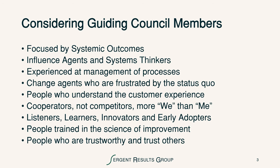Considerations for selecting guiding council members include that they ought to be focused on systemic outcomes. They need to be influence agents and systems thinkers, experienced in managing processes, and change agents who are frustrated by the status quo. They need to understand the customer experience, be cooperators not competitors, focused more on we than me, and be listeners, learners, innovators, and early adopters. They need to be trained in the science of improvement and be people who are trustworthy and who trust others.